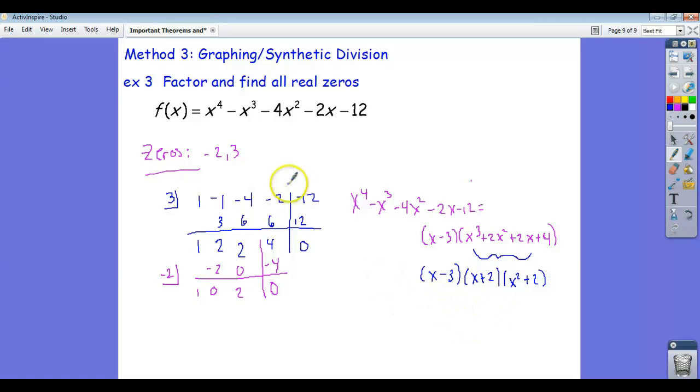And so now I know my zeros are three and negative two, we already knew those, but the other two come from here. x squared plus two equals zero means that x squared equals negative two, which means x equals plus or minus the square root of negative two, which is plus or minus i root two.